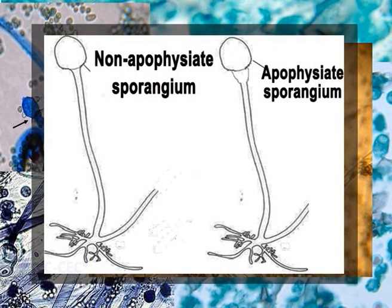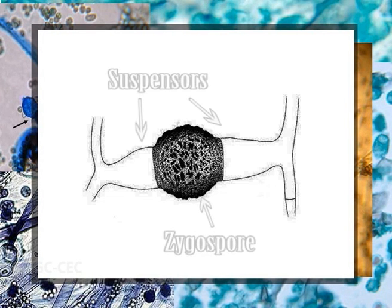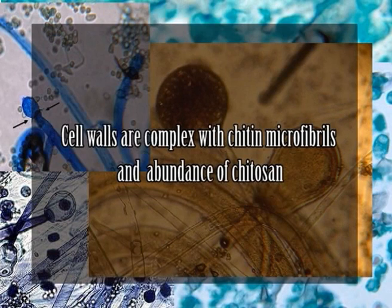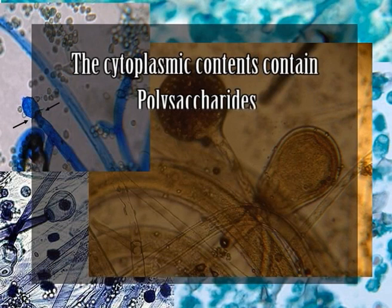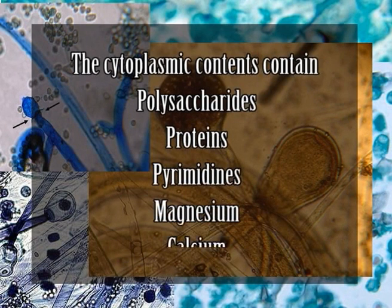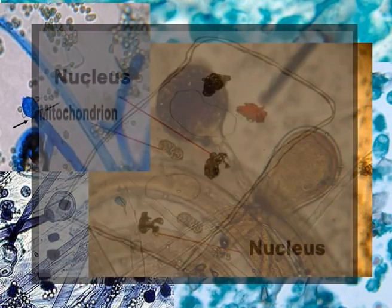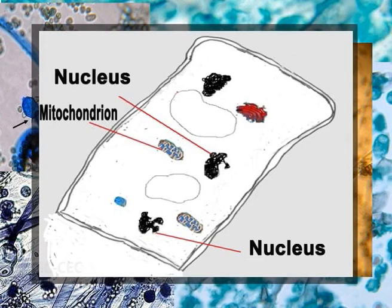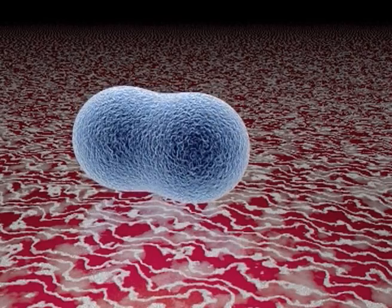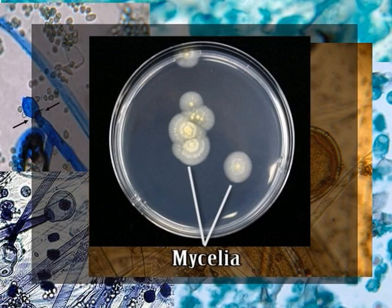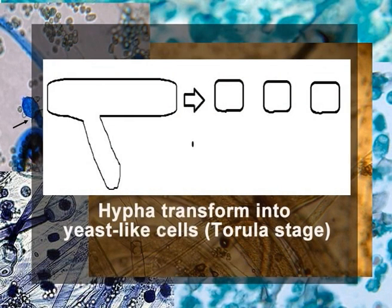The species produce non-apophysate sporangia that have a wet or dry wall when mature; the suspensors are typically enlarged, equal, and opposite. Cell walls are complex with chitin microfibrils and an abundance of chitosan. The cytoplasmic contents contain polysaccharides, proteins, pyrimidines; magnesium and calcium have also been detected. It was in Mucor rouxii that chitosomes were first reported. The cytoplasm often shows rapid streaming. Nuclei are irregular in shape and divide by constriction, not by mitosis and spindle formation. In anaerobic liquid cultures, especially in presence of carbon dioxide, the mycelium breaks down into small spherical independent cells — this is called the torula stage or torula condition.